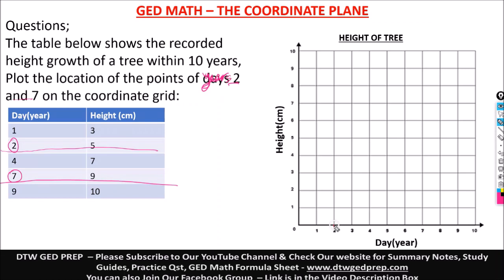For year two, this is year two — and what is the height when it is year two? The height is five centimeters. Year two, this is the height, five centimeters. Just like what we did, we trace — this will be our point, the location of this data. For year seven, the height is nine centimeters. You will come to year seven, trace to where nine is — this is where nine is. Trace out nine, then this is year seven, trace it down, they meet here. So these are the two locations. In plotting, we draw a straight line that will cross the two points.